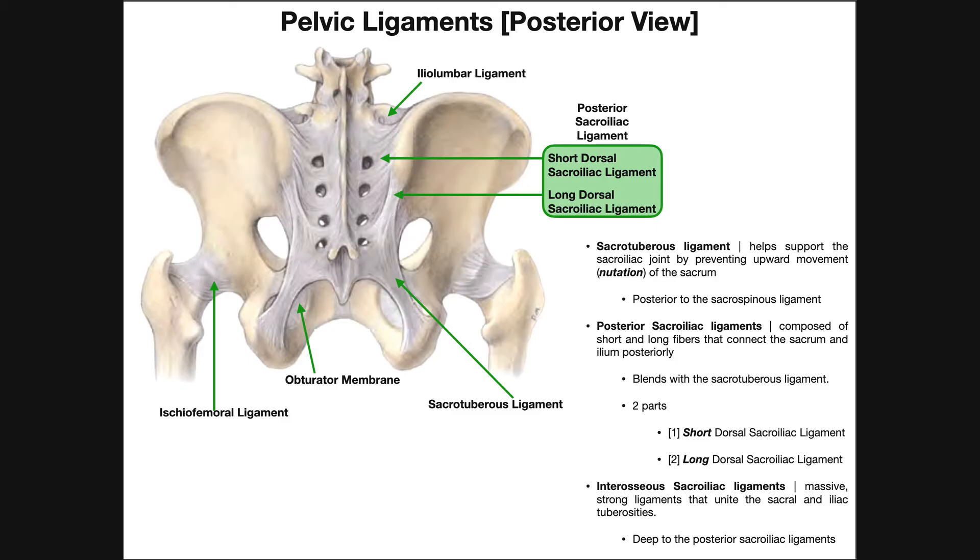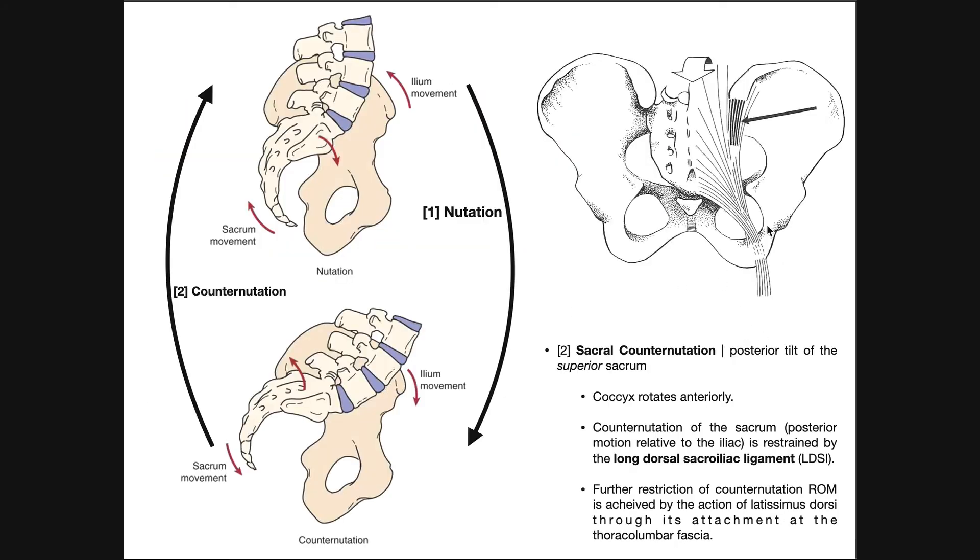That ligament actually restrains counter-nutation, and that ligament's actually shown right here. Remember that it actually connects the most posterior part of the iliac crest, really with the sacrum, and then also partially blends with this ligament right here, which is the sacrotuberous ligament.